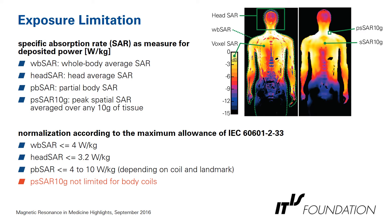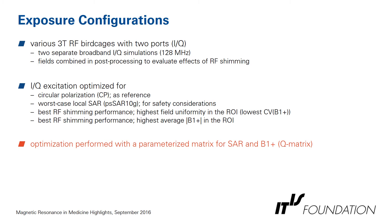The exposure limitation is done using SAR — specific absorption rate. Typically, whole body SAR, head SAR, and partial body SAR are used. The standard uses 10-gram averaged peak spatial SAR as a measure for local SAR. Normalization is always done according to the maximum allowance in product standard IEC 60601-2-33: whole body SAR less than 4 W/kg, head SAR less than 3.2 W/kg, and partial body SAR less than 10 W/kg. The peak spatial SAR 10g is actually not limited for body coils in the standard.